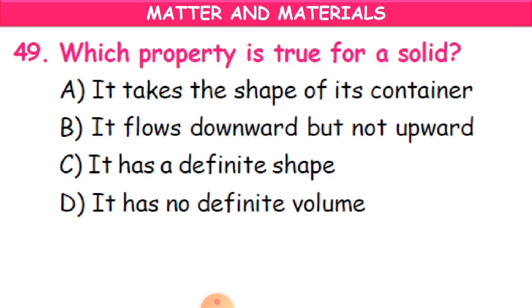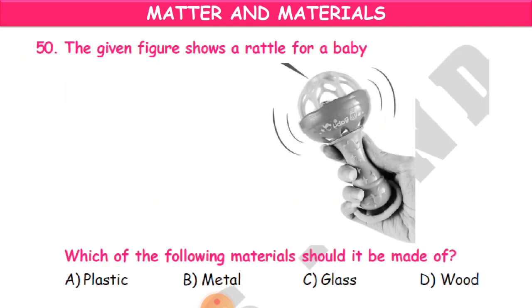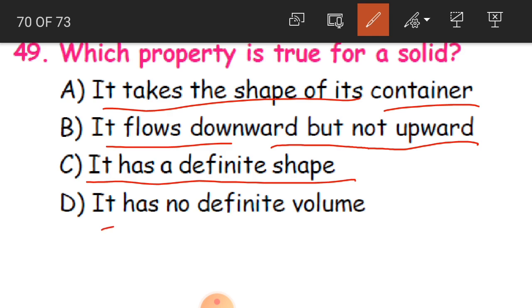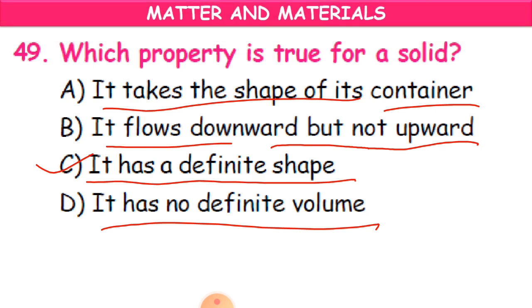Question 49: Which property is true for a solid? It takes the shape of its container; it flows downward but not upward; it has a definite shape; or it has no definite volume? The answer is it has a definite shape. A solid will not take the shape of any container — if you put jaggery in a round or vertical container, the shape of the jaggery remains the same. So C — it has a definite shape — is the correct answer.